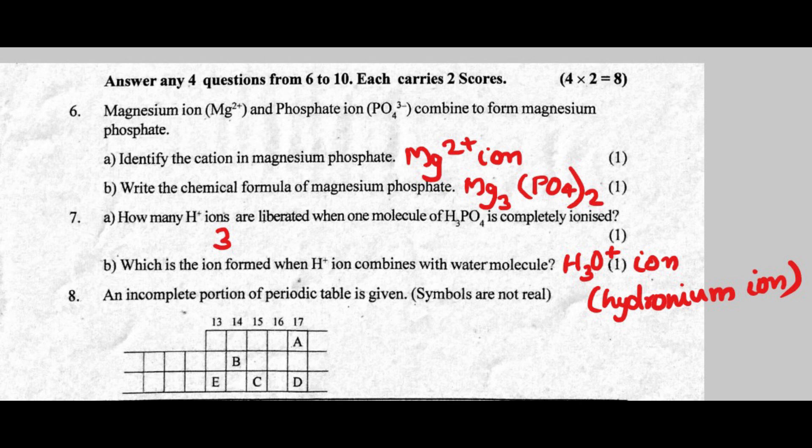Identify the cation in magnesium phosphate. The cation in magnesium phosphate is the Mg2+ ion.